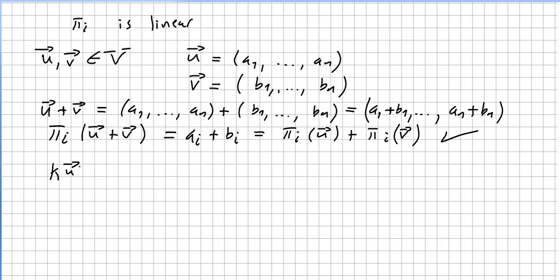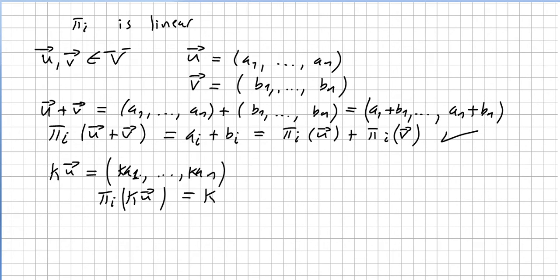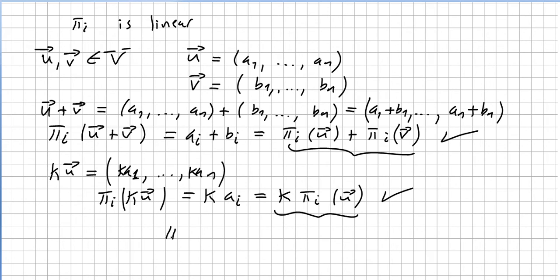For scalar multiplication: k·u = (k·a1, ..., k·an), so pi_i(k·u) = k·a_i, which equals k·pi_i(u). Checked. From both conditions we conclude that the projection mapping is a linear functional.